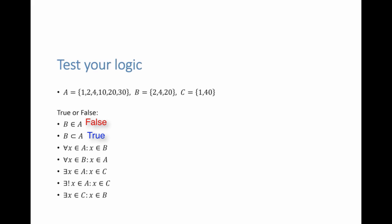Next statement: for every x in A, x is also in B. That is not true because the element 10 is in A but not in B, so this is incorrect. Next: for every x in B, x is also in A. Is that true? 2, 4, and 20 exist in A as well, so this is true.